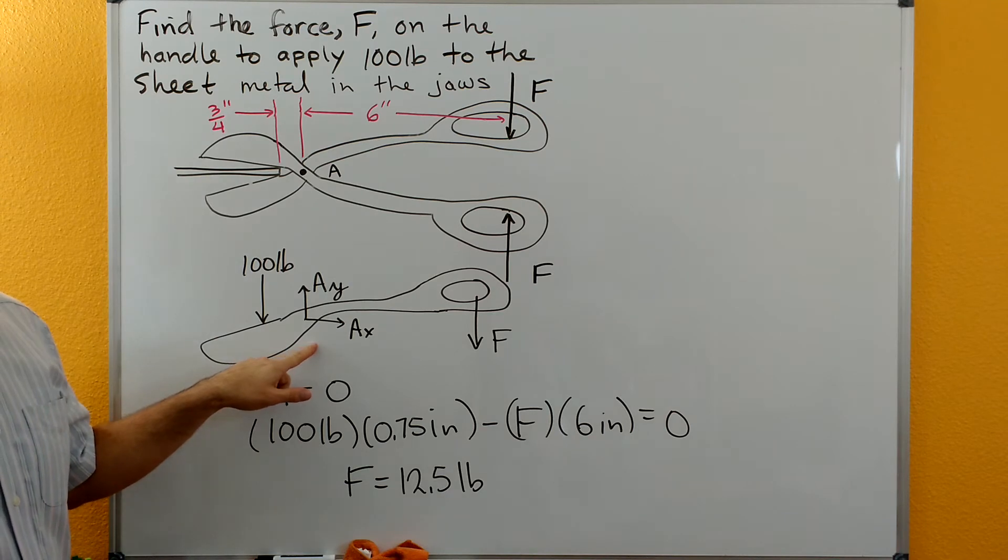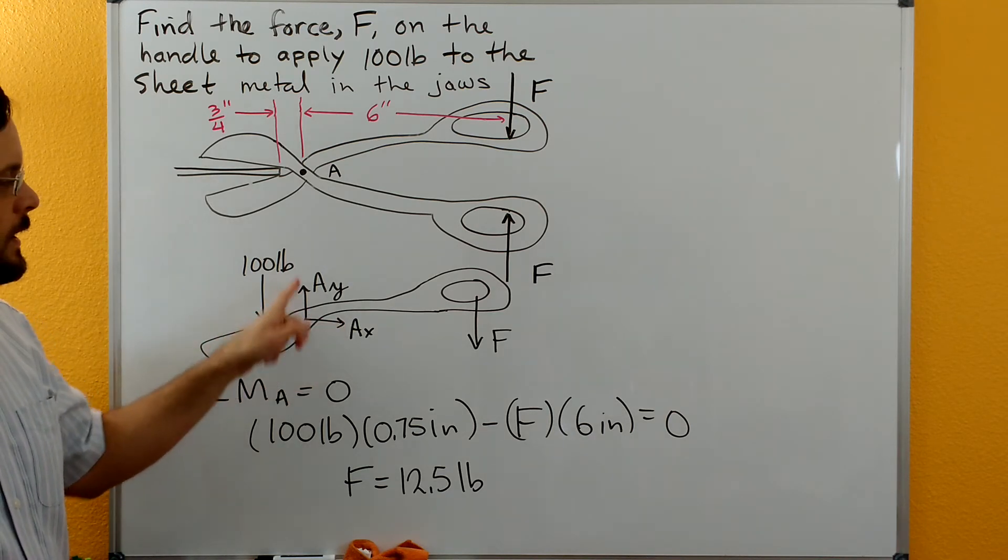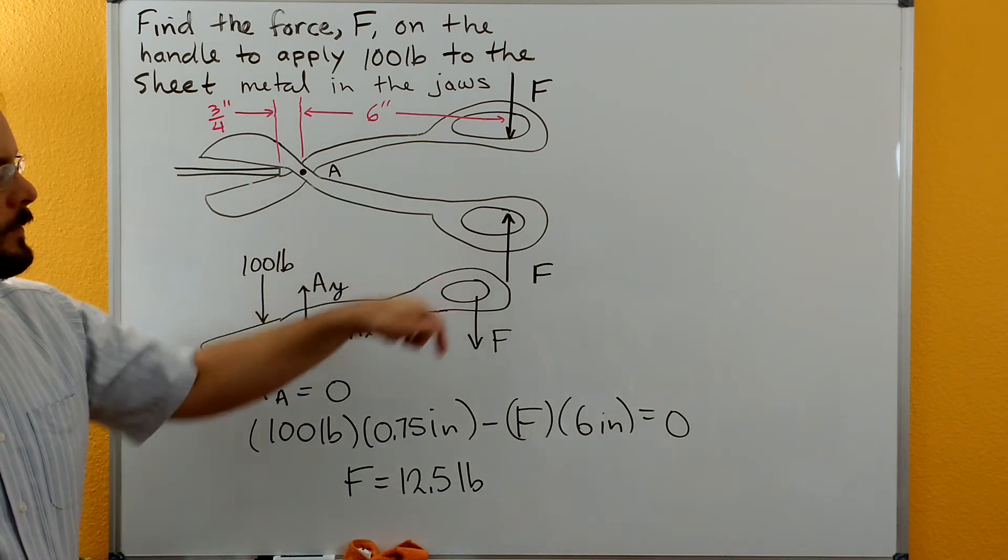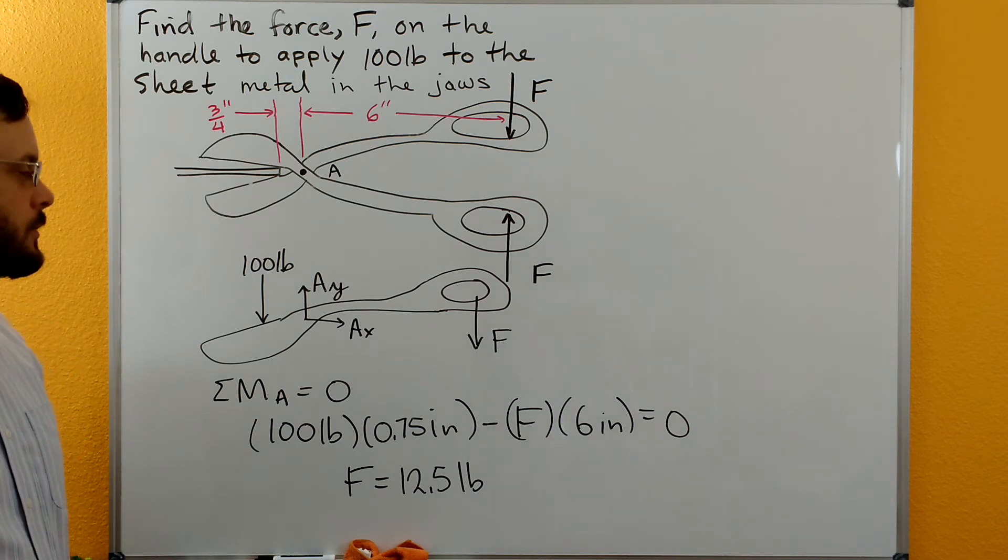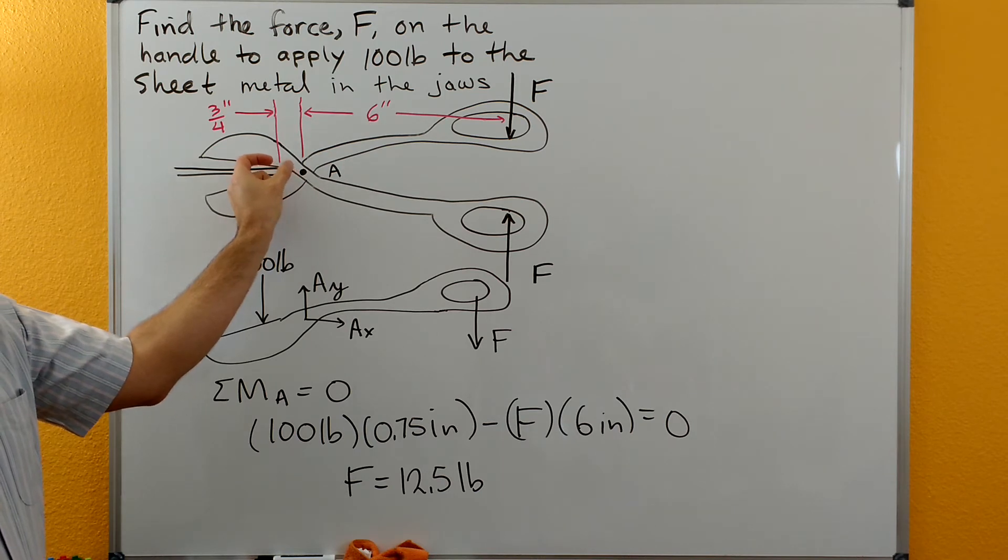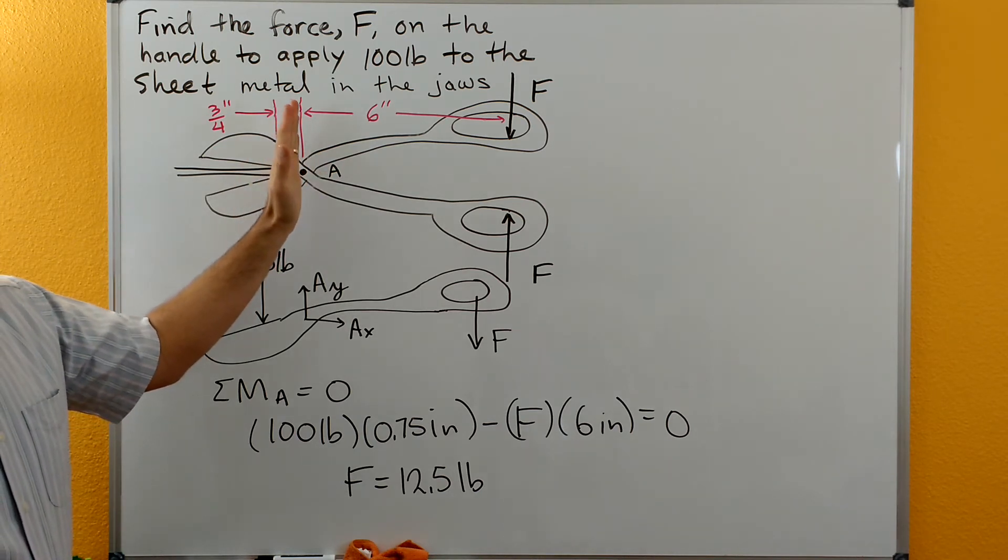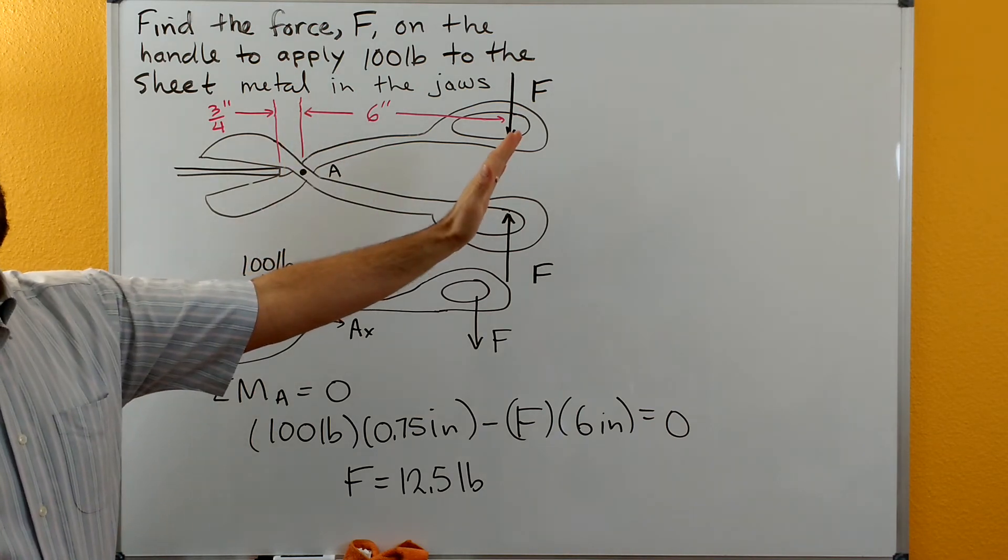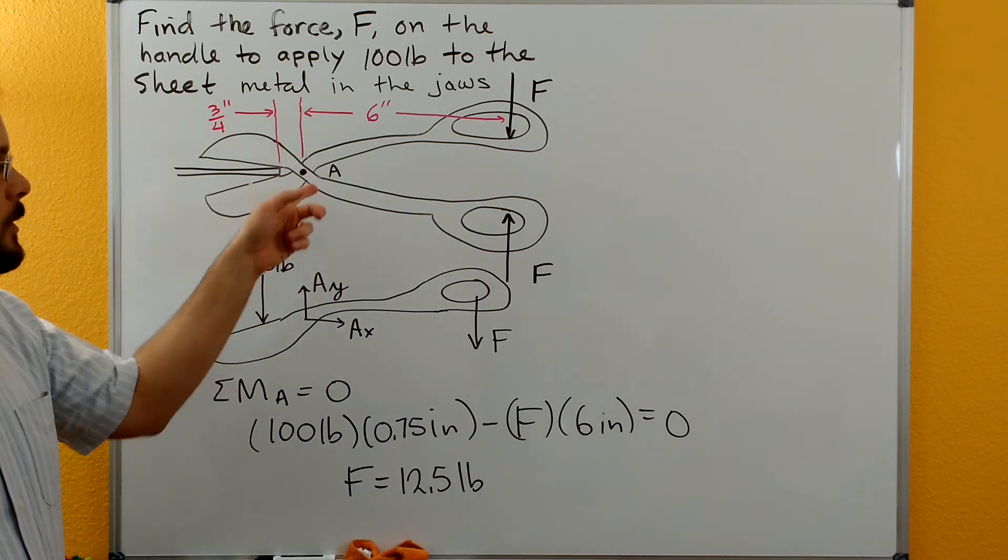We have a smooth frictionless pin at A. So we have the force F that acts on the jaws. Point A is three quarters of an inch over from where the jaws contact the sheet. And then the force F is six inches over from point A from our pin here.